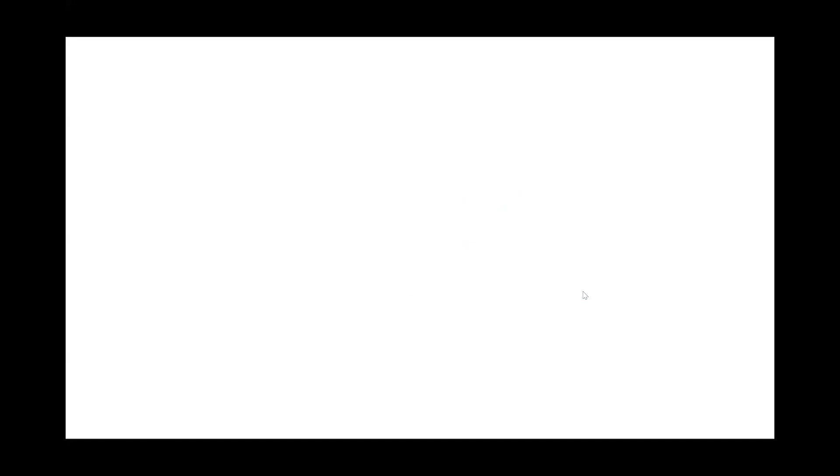So why don't you try the next one? 41 into 32. Start with the same process. Write 41 and write 32 below it. Yes. So you start with 2 into 1 which is 2 followed by 8 plus 3 gives you 11. Now 11 you are allowed to write 1 and the 1 goes carry forward. So when you have 4 into 3, 12. So you have the carry forward added to 12. So that means 1, 3, 1, 2.